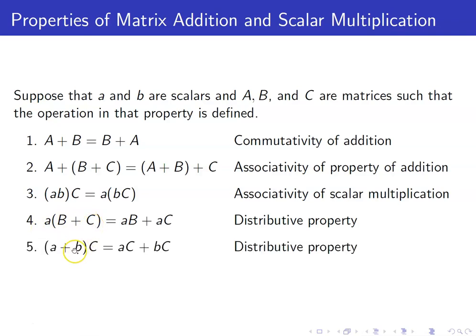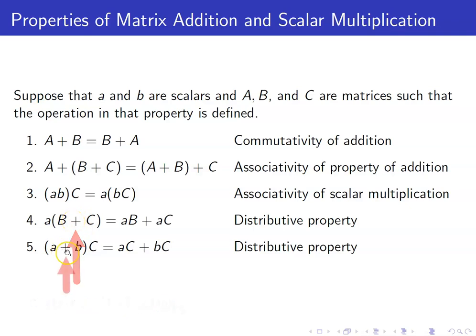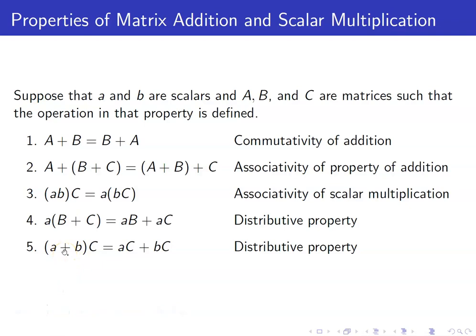Next, we have the distributive property. We have the sum of two matrices B and C; when you multiply it with a scalar, that is the same as multiplying the scalar with the first term and then adding that with the scalar multiple of the second term. Take note: the plus here is matrix addition, whereas the plus that occurs with scalars is scalar addition, because here you are adding two numbers, whereas there you are adding two matrices.